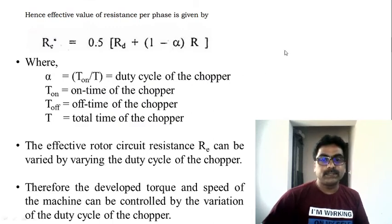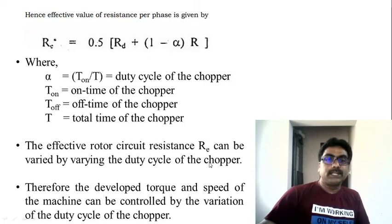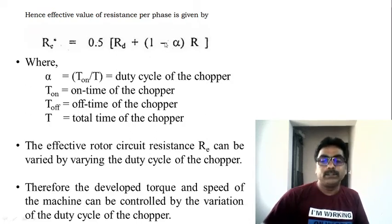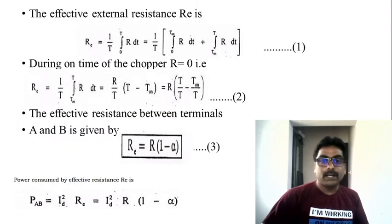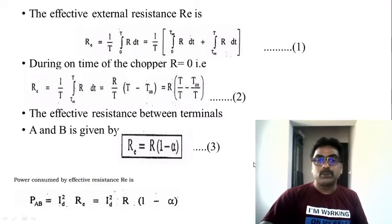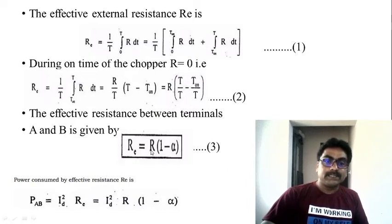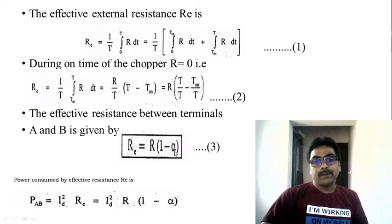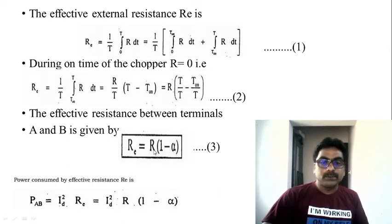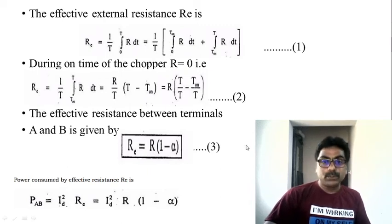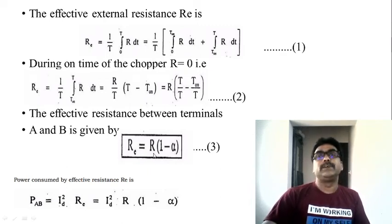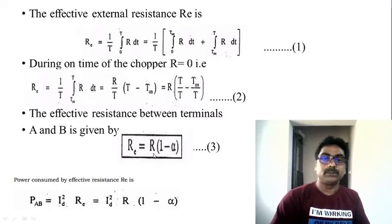The effective rotor resistance R_eff can be varied by varying the duty cycle of the chopper converter. Using the simplified equation R_eff = R × (1 − α): by varying the duty cycle α from 0 to 1, you can effectively vary the resistance from R (maximum, when α = 0) to 0 (when α = 1). So by varying α from 0 to 1, the effective resistance varies from R to 0.